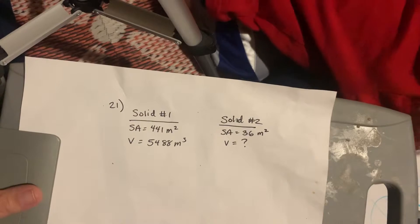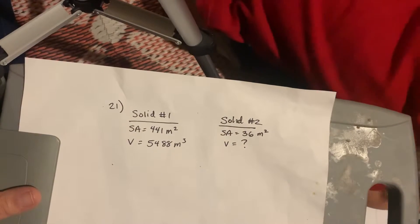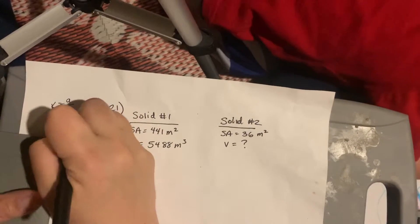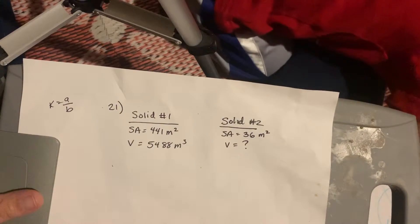So, we need to know, basically, we need to be able to figure out from the information given to us what our scale factor is, which is A over B. Right? We know the scale factor for surface area.